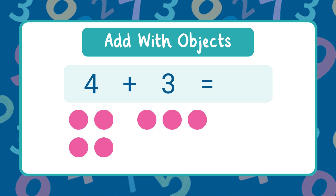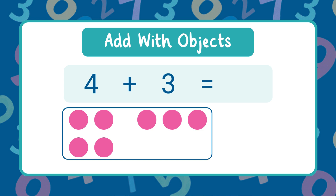Now it's your turn to practice adding with objects. What is four plus three? We can count the objects. The sum is seven.